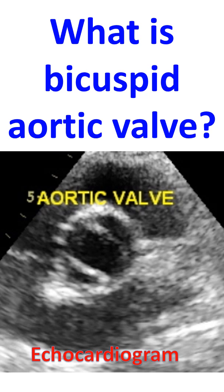The aortic valve is the valve between the left ventricle and the aorta. The left ventricle is the lower left chamber of the heart. The aorta is the largest blood vessel, carrying oxygenated blood from the left ventricle to the whole body.